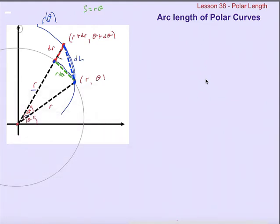This is a right triangle because the green line is really a tangent line, and tangents are perpendicular. Since it's a right triangle, we can write the relationship between the three sides: the square of the hypotenuse dL equals the square of one leg, dr squared, plus the square of the other leg, (r dθ)².